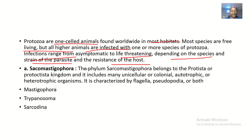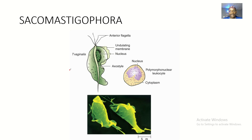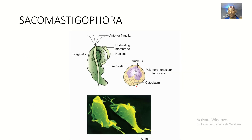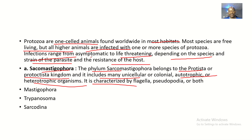Starting with Sarcomastigophora: the phylum Sarcomastigophora belongs to the Protista kingdom and includes many unicellular or colonial, autotrophic or heterotrophic organisms. It is characterized by flagella, pseudopodia, or both. As you can see here, organisms may have flagella or pseudopodia. Examples of organisms under Sarcomastigophora include Mastigophora, Trypanosoma, and Sarcodina.